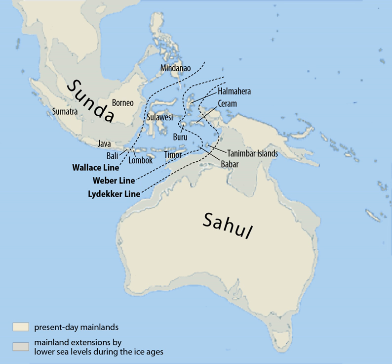The area of exposed land in Sundaland has fluctuated considerably during the past 2 million years. The modern land area is approximately half of the maximum extent. The western and southern borders of Sundaland are clearly marked by the deeper water of the Indian Ocean. The eastern boundary of Sundaland is the Wallace Line, identified by Alfred Russel Wallace as the eastern boundary of the range of Asia's land mammal fauna, and thus the boundary of the Indomalaya and Australasia ecozones.